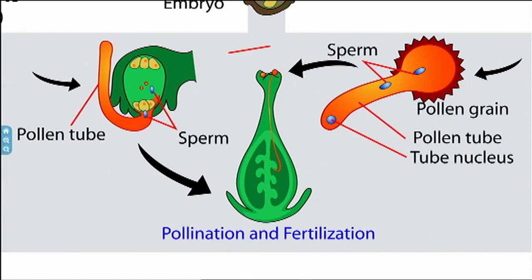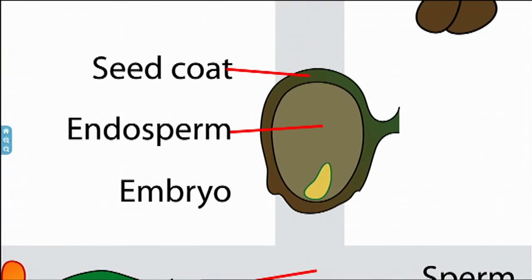The first sperm hits the egg and you get the embryo — you get a baby plant out of that. The second sperm is not there as a backup. It has a very, very important job. Its job is to find the two dud eggs in the middle and hybridize, fuse together and become endosperm, which is a fancy botanical way of saying plant food.